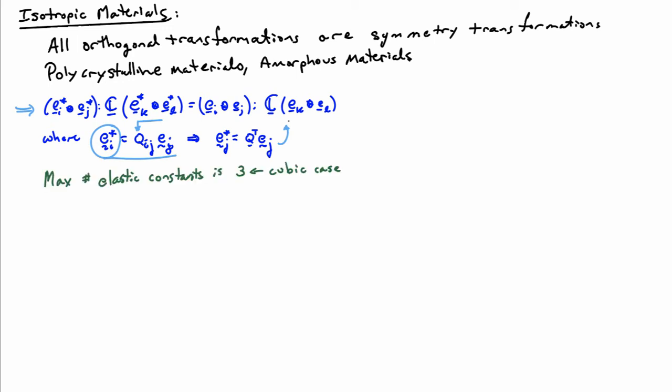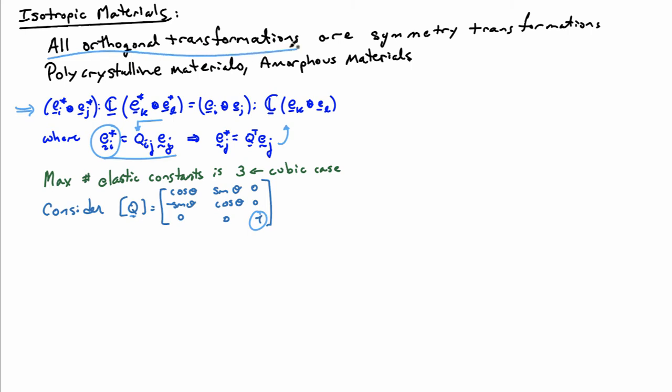I'm going to do this for a very particular case for Q. Before doing that, let me note that the maximum number of elastic constants for an isotropic material is going to be three, because cubic materials have only three elastic constants and isotropic materials have all symmetry transformations available — in particular, all those that cubic materials have. So at most there are three constants. To be concrete, let's look at a symmetry element that is an arbitrary rotation about the 3-axis: cosine, sine, minus sine, cosine, with a one in the 3,3 location, representing rotation by angle theta. Because isotropic materials have all orthogonal transformations as symmetry elements, I can use this transformation to come up with a restriction on the elastic constants.